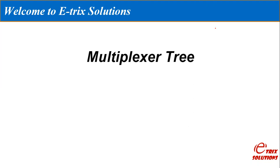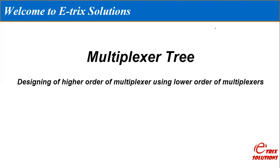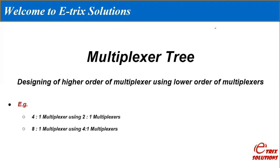So let us first understand what is the multiplexer tree. Suppose you have many 2x1 multiplexers and you want a 4x1 multiplexer for some particular application. The multiplexer tree is the concept of designing a higher order multiplexer using lower order multiplexers. For example, we can design a 4x1 multiplexer using 2x1 multiplexers, and we can design an 8x1 multiplexer using 4x1 or 2x1 multiplexers.